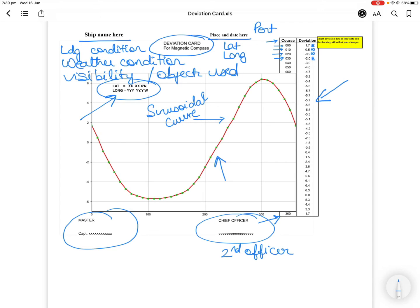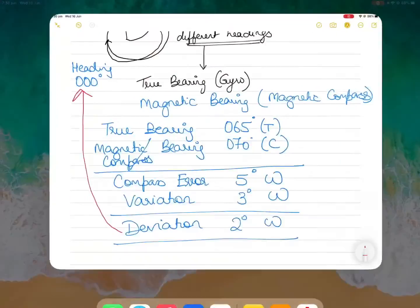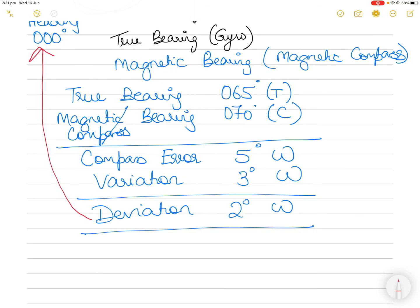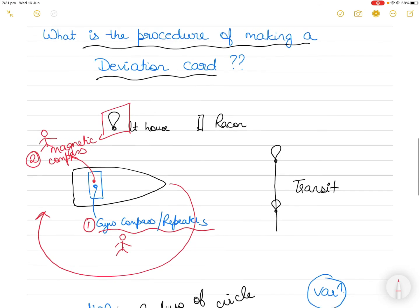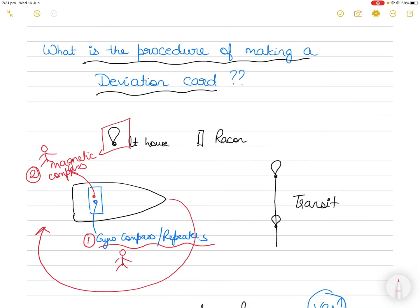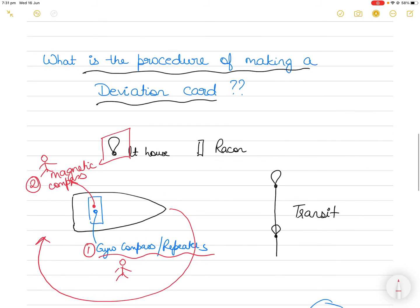So this is the procedure for making a deviation card, along with the inputs that should be included. This question is increasingly being asked in oral exams because making a deviation card tests your knowledge of the difference between true bearing and compass bearing, how to calculate compass error, and how to find deviation when variation is given. Let me know what you thought of this video and whether it was easy to understand. I always appreciate your feedback as it helps me improve. Thank you for supporting the channel — see you soon with the next video.